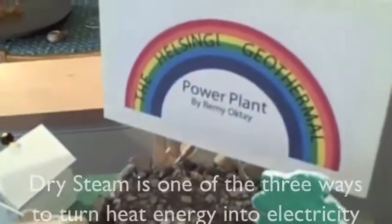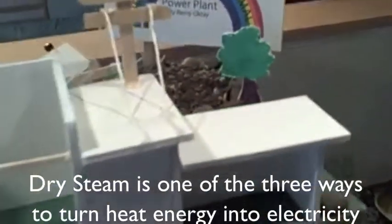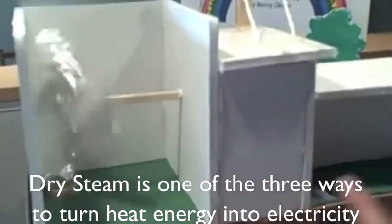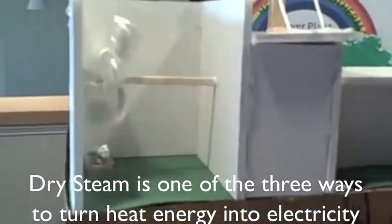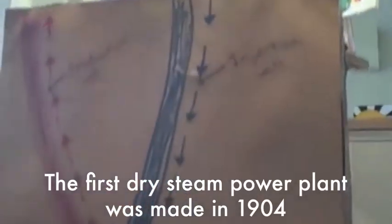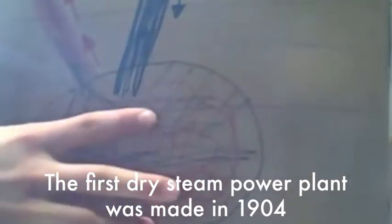So then after the steam goes through here, it goes into the condenser over here. And what the condenser does is it takes the steam and turns it into water and then sends it back down the injection well to go down to where all this hot magma is.